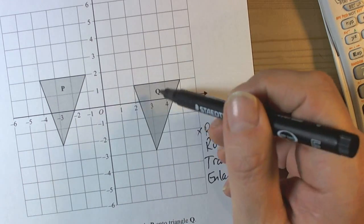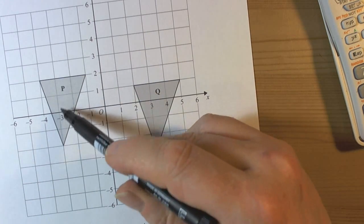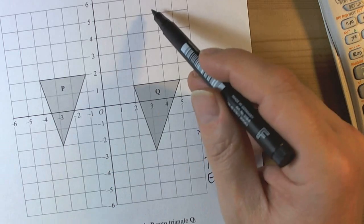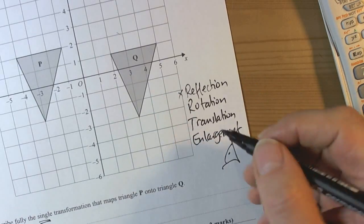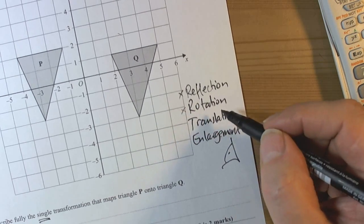Rotation. Again no, because it would have this bottom vertex here pointing upwards in some way or pointing sidewards. So it's not a rotation. Again we can check that with tracing paper but we can see it's not a rotation.